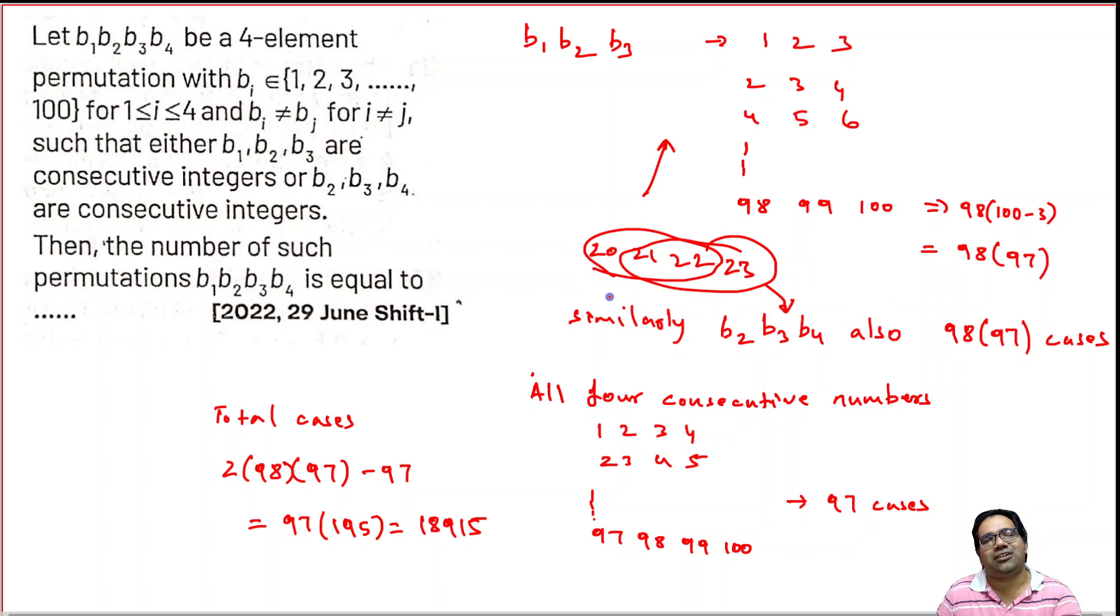But luckily, all four numbers are continuous - how many such numbers? Again, we will start with 1 to 4 or 2 to 5 or at max 97 to 100. So basically, we have 97 options of taking four consecutive numbers. We cannot start with 98. So only we have 97 such numbers using numbers between 1 and 100, where all four are continuous.